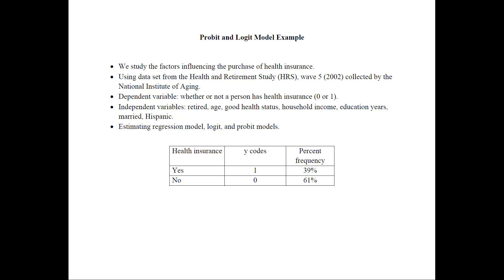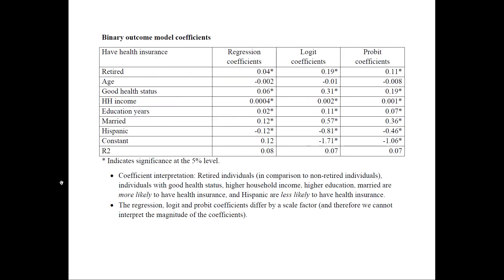Once we estimate these models, I will show you the results and how to interpret them. Here is a table of health insurance — yes or no — our dependent variable. The Y codes are 1 for yes and 0 for no. From the data, 39% of the people have health insurance and 61% do not.